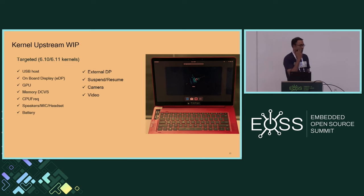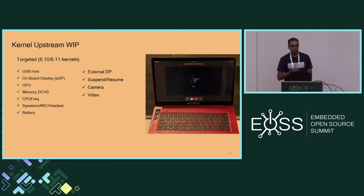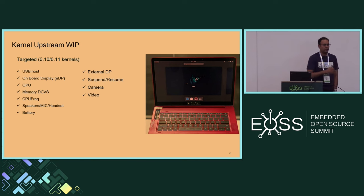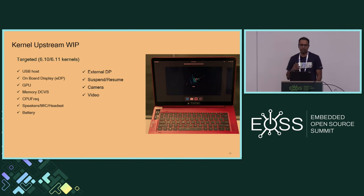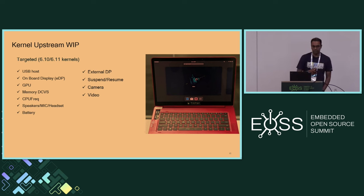The top of our list for what's missing is primary display over eDP, and then power management things like getting dynamic scaling working with CPU DVFS and memory DCVS — DCVS stands for dynamic clock and voltage scaling, the technique we use to scale the DDR as well as the caches. Then low power modes through system-wide suspend/resume, and camera and video are the big missing pieces for now.